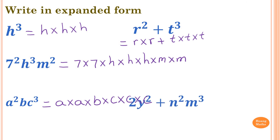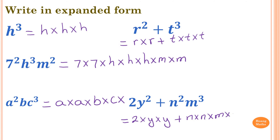Last one: 2Y squared is 2 times Y times Y. We add N squared times M cubed, which is N times N, and then M times M times M.